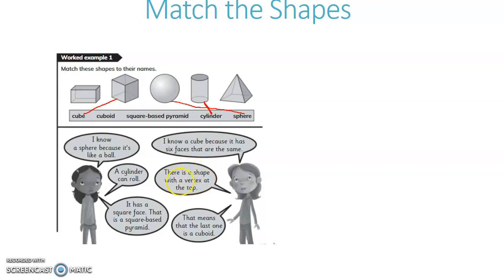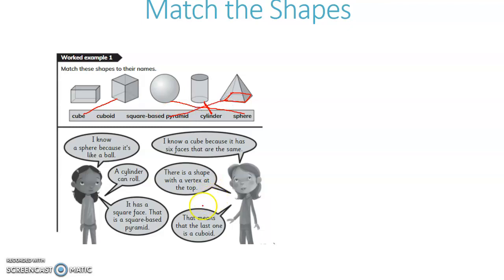There is a shape with a vertex at the top. It has a square face — that is a square-based pyramid. It is a 4-sided shape, a square shape. So, this is a square-based pyramid. We match it with square-based pyramid.